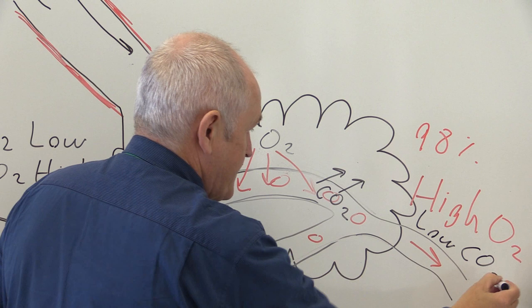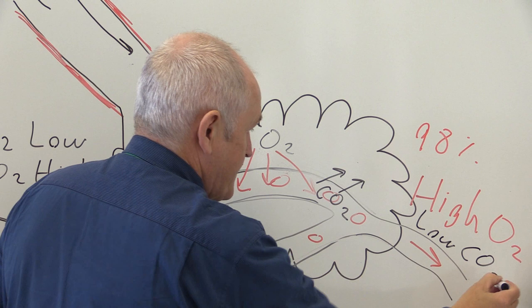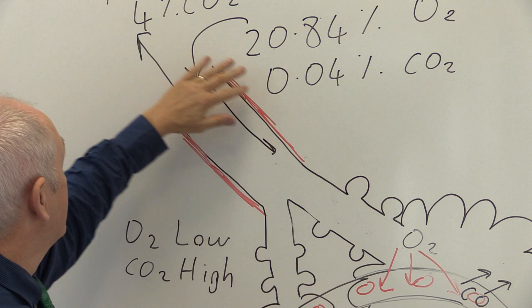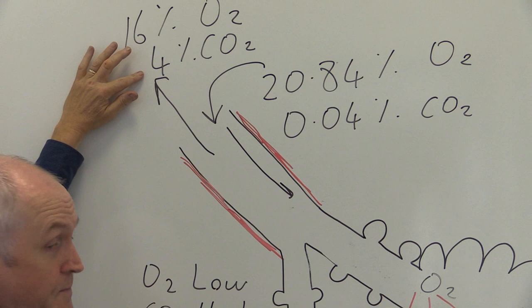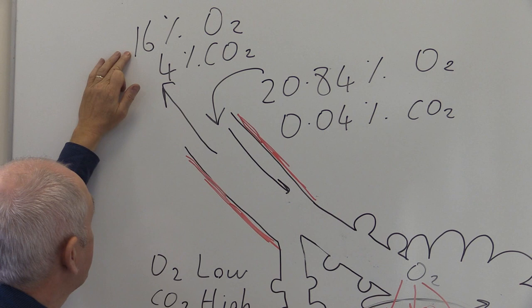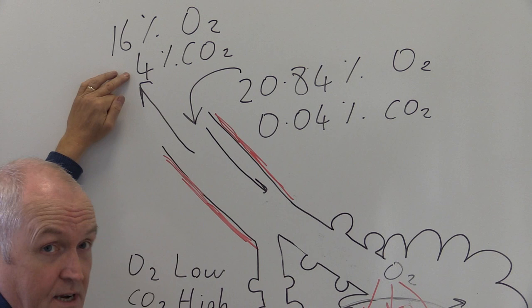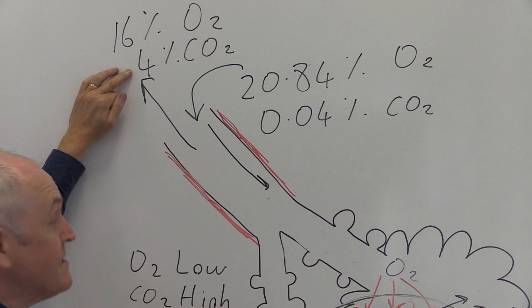This explains why inhaled air is high in oxygen but low in carbon dioxide, compared to exhaled air which is lower in oxygen but higher in carbon dioxide. The exhaled air is lower in oxygen because that oxygen has diffused from the air into the blood. The exhaled air is higher in carbon dioxide because the carbon dioxide has moved from the blood into the air in the alveoli to be breathed out.